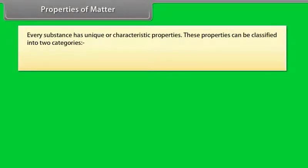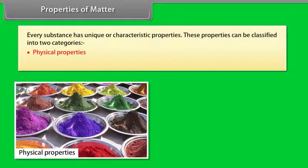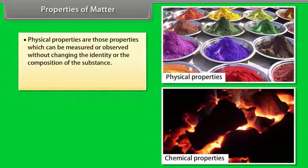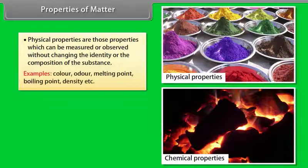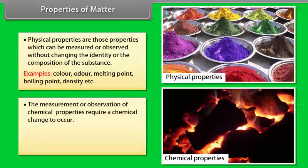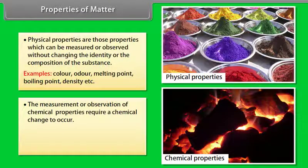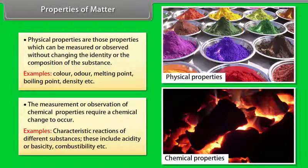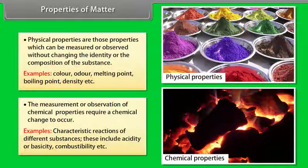Every substance has unique or characteristic properties. These properties can be classified into two categories: physical properties and chemical properties. Physical properties are those properties which can be measured or observed without changing the identity or the composition of the substance. Examples: Color, Odor, Melting Point, Boiling Point, Density, etc. The measurement or observation of chemical properties require a chemical change to occur. Examples: Characteristic reactions of different substances. These include acidity or basicity, combustibility, etc.